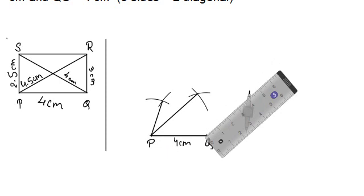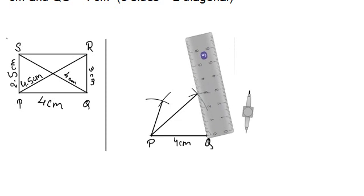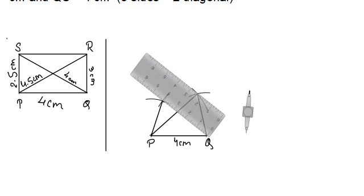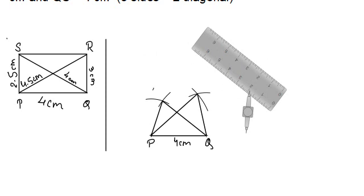Now keep the ruler at point Q and connect to the arc intersections — first the side QR, then rotate and join to form the second diagonal QS. The diagonals and sides from Q are now done. This gives us points S and R.